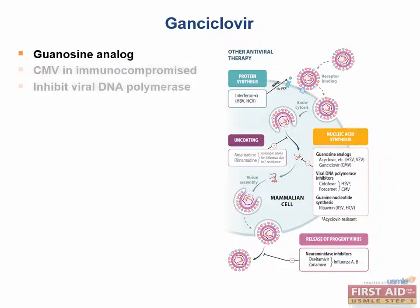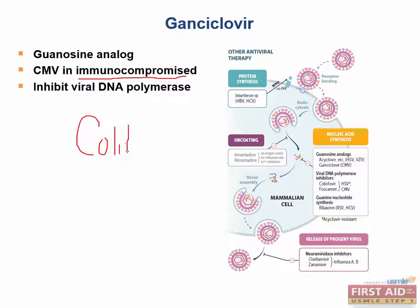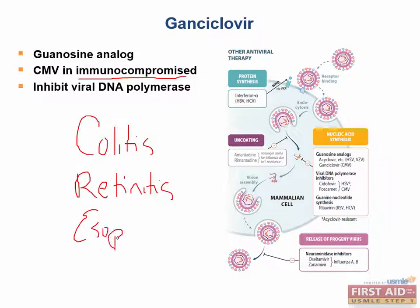Ganciclovir is a guanosine analog that is used to treat CMV specifically. It is very important to fight infections in the immunocompromised patient, specifically three diseases. The three important diseases CMV can cause in an immunocompromised patient are CMV colitis, CMV retinitis, and CMV esophagitis.